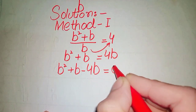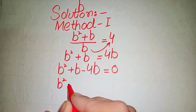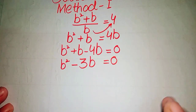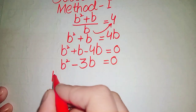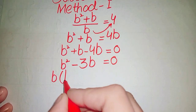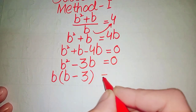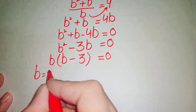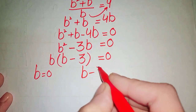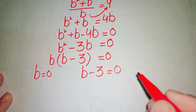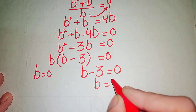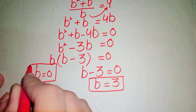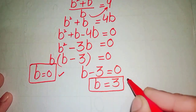This simplifies to b squared minus 3b = 0. Since b is a common factor, we factor it as b(b minus 3) = 0. This gives us two values: b = 0 and b = 3.